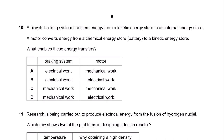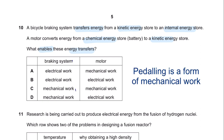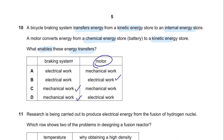Question 10. A bicycle braking system transfers energy from a kinetic energy store to an internal energy store. A motor converts energy from a chemical energy store in a battery to a kinetic energy store. What enables these energy transfers? In a braking system you need mechanical work, and in a motor it is electrical work. So the answer is D. These are all theory questions, so read from your notes and book resources to remember this information.